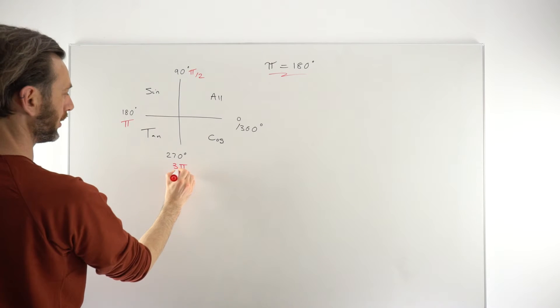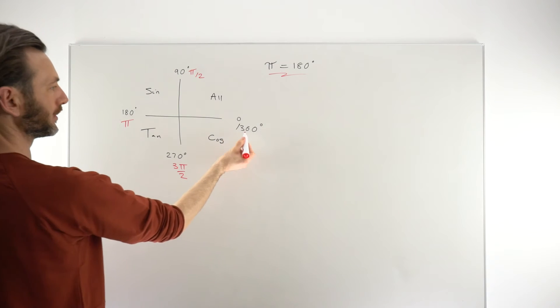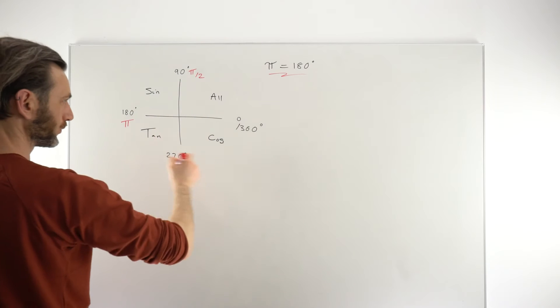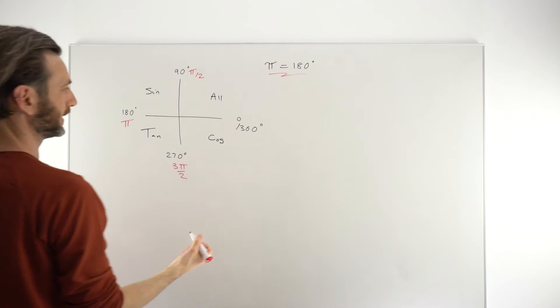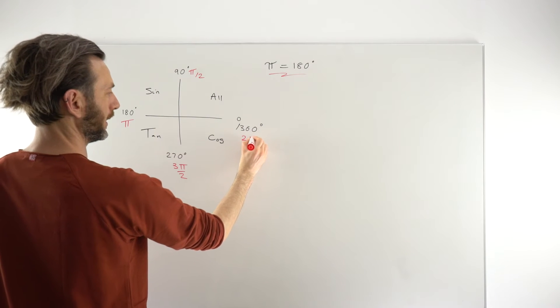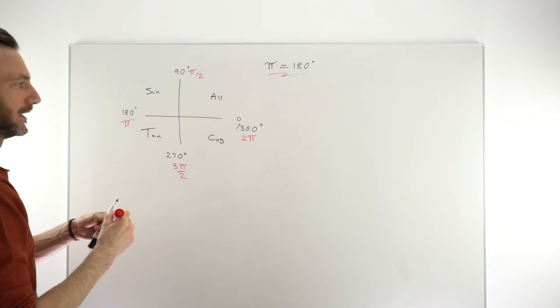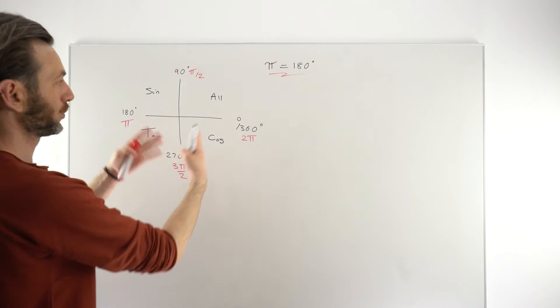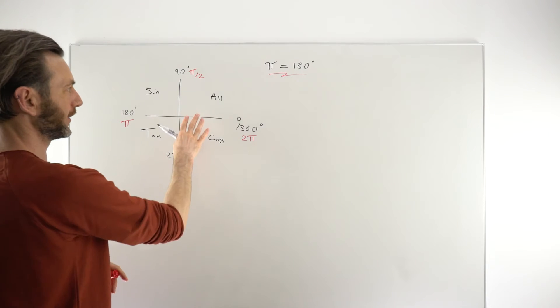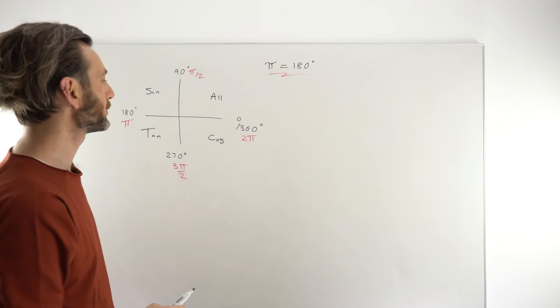And then by the time we get to 360, we've done a full circle. That would be twice 180, which is 2π radians. So that's quickly how we convert our CAST diagram from degrees to radians. It's not particularly difficult.